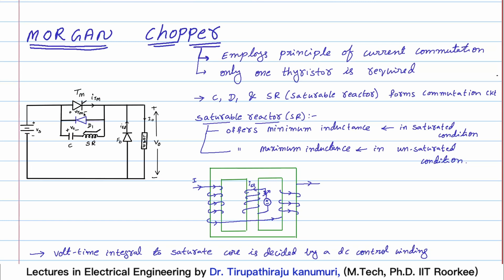The commutation circuit involves one diode D1, a capacitor, and instead of a normal reactor, one saturable reactor is used. This saturable reactor will decide how much time your thyristor will be in the ON condition - that means it will set the duration.